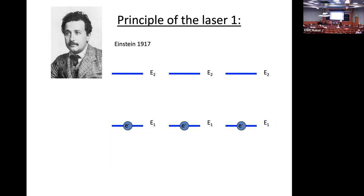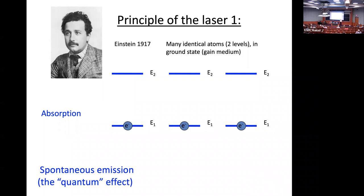In 1917, Einstein enunciated the principles of the quantum theory of radiation. You imagine a bunch of identical atoms. Generally at room temperature, the atom is going to be in the ground state mainly. If a photon comes in, it can be absorbed by the medium, excite the atom to the excited level. Then it can spontaneously drop down, emitting a photon. That's called spontaneous emission, and that's the quantum effect.